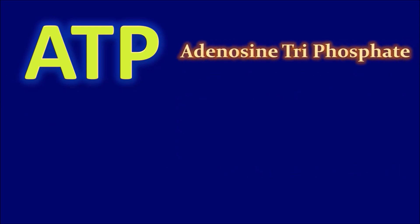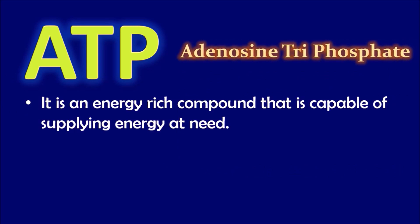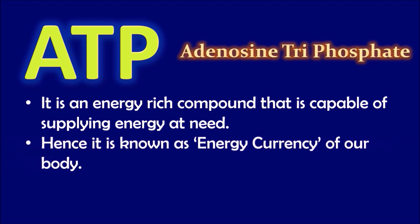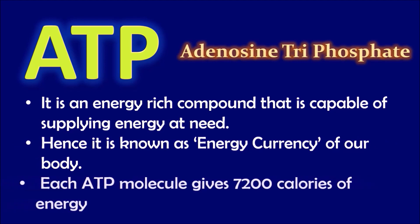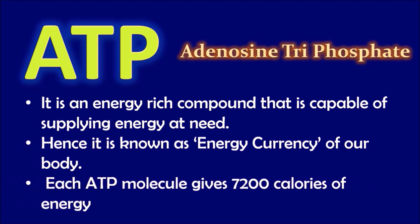ATP, or adenosine triphosphate, is an energy-rich compound that is capable of supplying energy on demand. Hence, it is known as the energy currency of our body. Each ATP molecule gives 7,200 calories of energy.